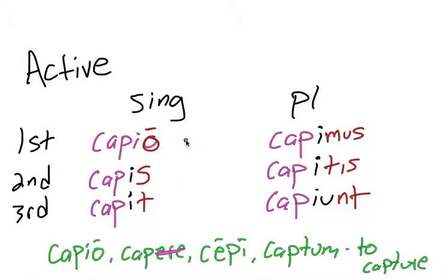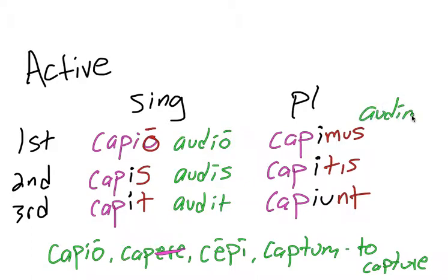Conjugating audio in the present active: audio, audis, audit, audimus, auditis, audiunt. If you look at the forms, they're exactly the same, the only difference is that fourth conjugation has a long i in the second person and first person plural. That's audimus, auditis, audis, and capio or third i-o verbs are short. That's really the only difference.